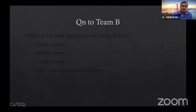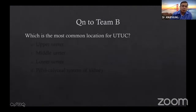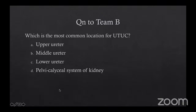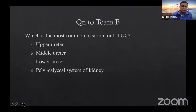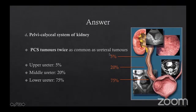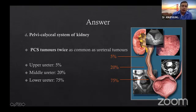Question 2 to Team B: Which is the most common location of upper tract urothelial carcinoma? Options: upper ureter, middle ureter, lower ureter, or PCS. Dr. Amitabh answers D — Pelvic Calyceal System — which is correct. PCS tumors are twice as common as ureteral tumors. Among ureteral tumors: lower ureter is 75%, middle ureter 20%, and upper ureter only 5% — remember these figures for your viva.